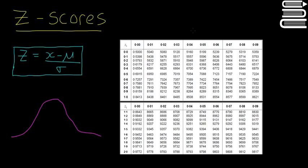So now we're going to start on z-scores, which are kind of one of the tougher bits in statistics, so make sure to pay attention. We've seen the z-score formula before: z is equal to x minus mu divided by the standard deviation.